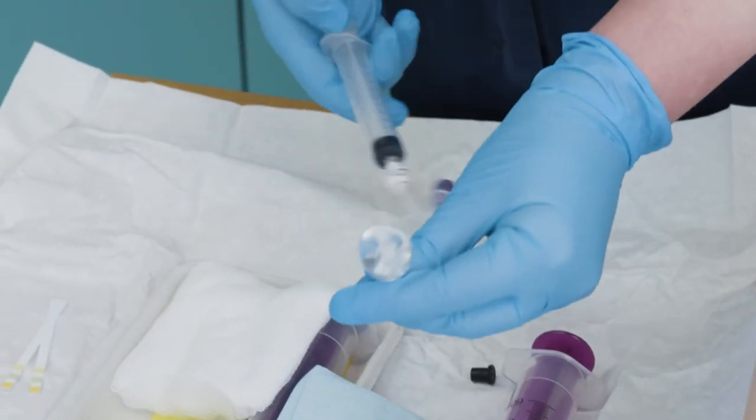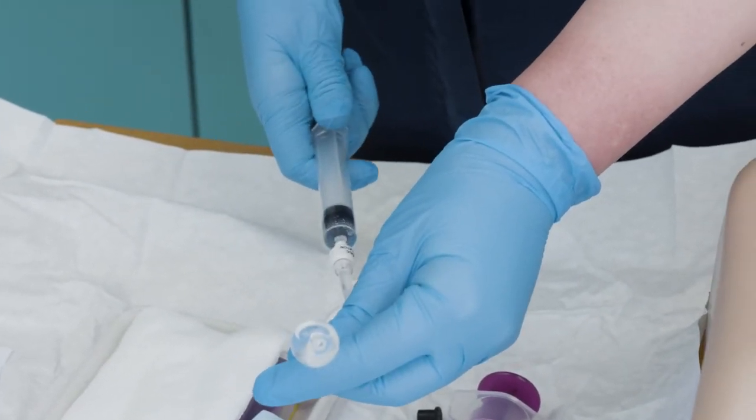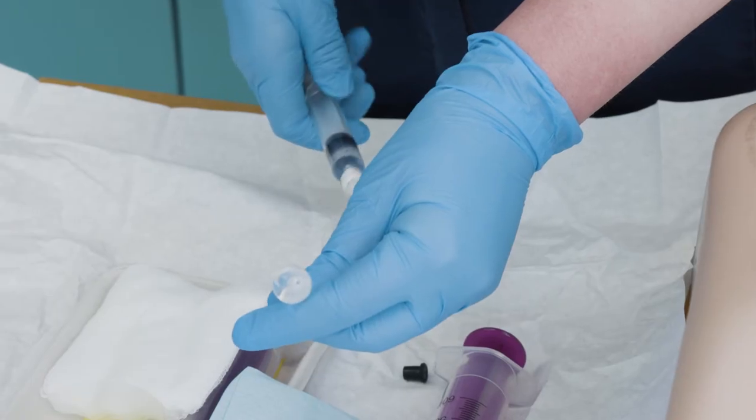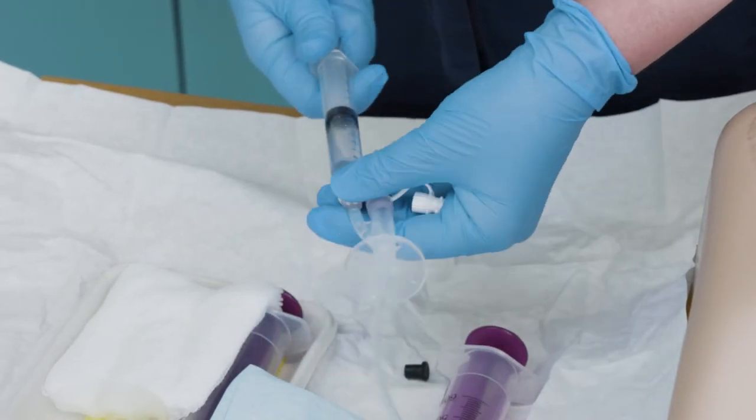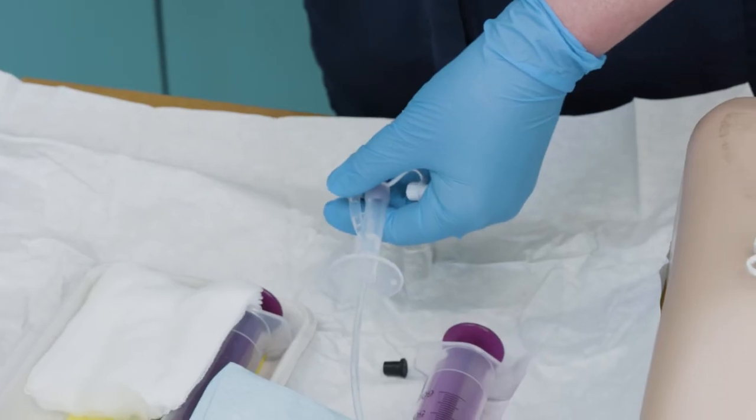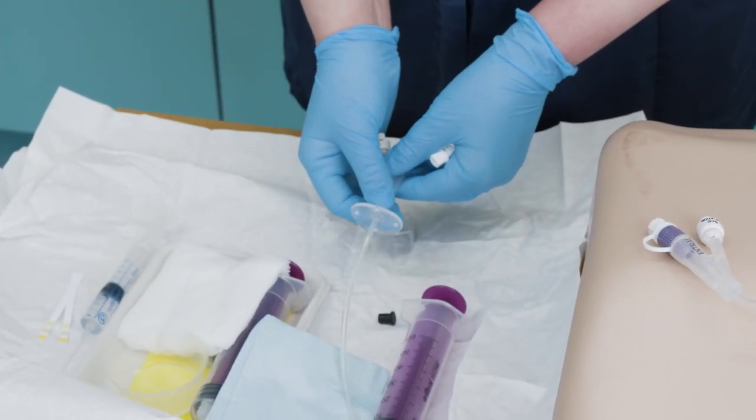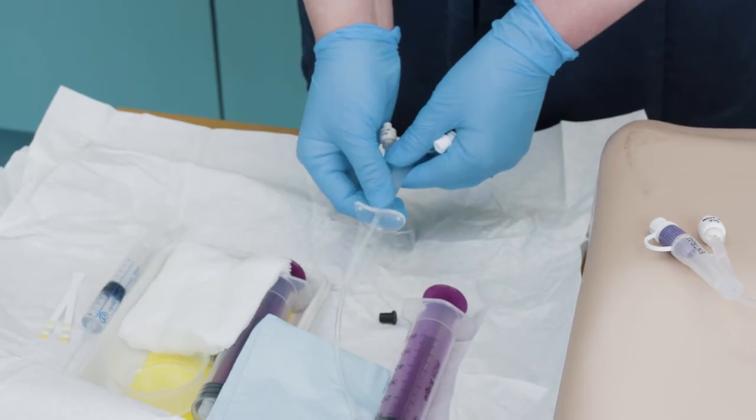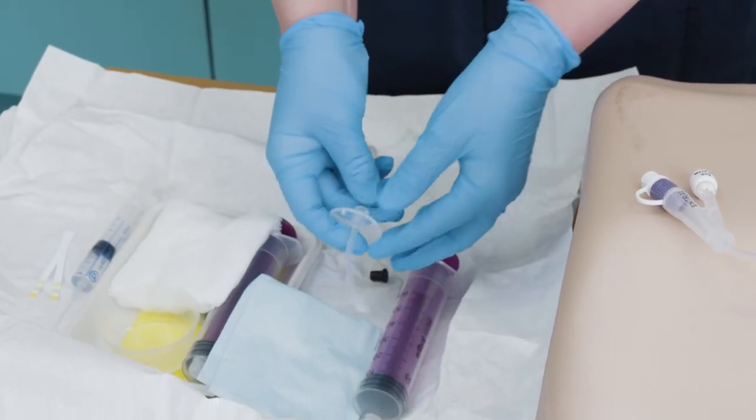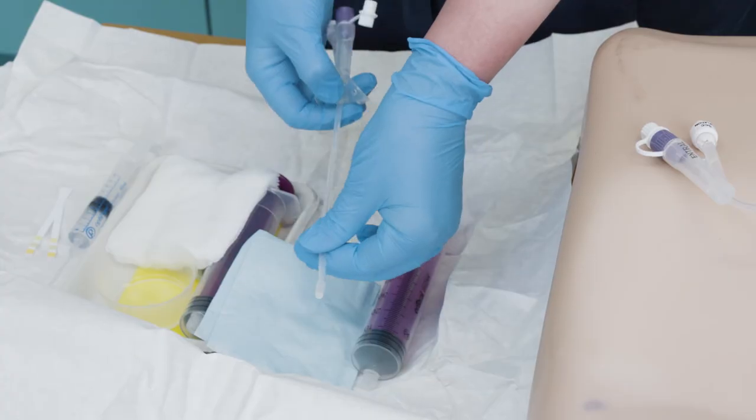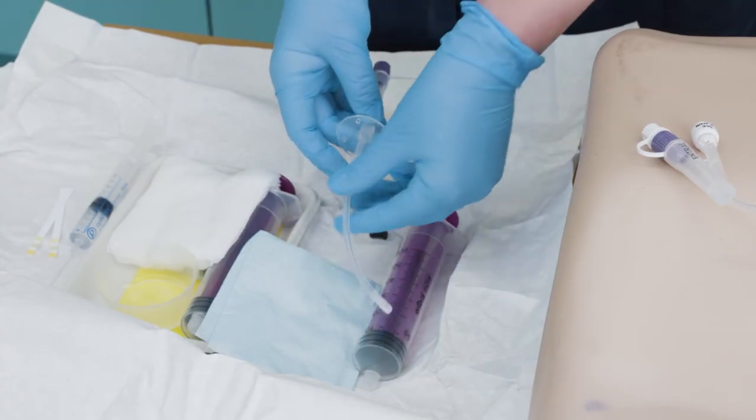Once you are sure that the balloon is working, deflate the balloon. Slide the external retention device of the new balloon gastrostomy tube down the tube and then return it to its original position.